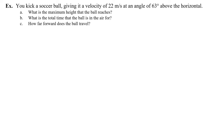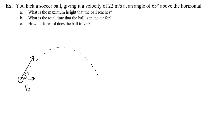Problem: You kick a soccer ball giving it a velocity of 22 meters per second at an angle of 63 degrees above the horizontal. What is the maximum height the ball reaches? What is the total time the ball is in the air? How far forward does the ball travel? Let's draw the picture — initial velocity v₀ at angle theta of about 63 degrees — and draw the path as a parabola.